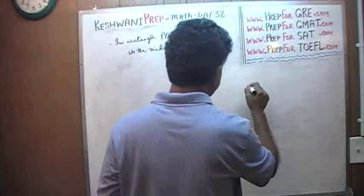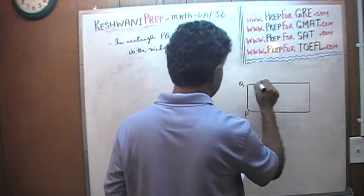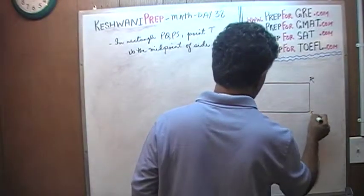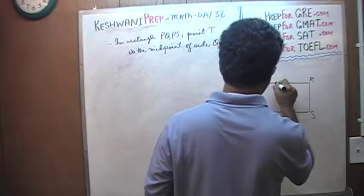So let's draw a rectangle here. PQRS, point T is the midpoint of QR. Let's find the midpoint here, right here. So far so good.